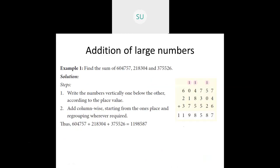So here I have taken an example. Find the sum of 6,47,57, 2,80,304, and 3,75,526. The first step in finding the sum of these numbers is to write the numbers vertically one below the other according to their place values.